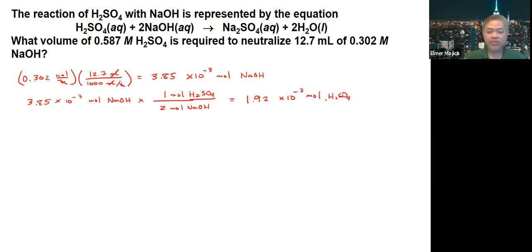Now remember, you're given the moles and you're given the molarity. What we can do is determine the volume of it. We have 1.92 times 10 to the negative 3 moles.